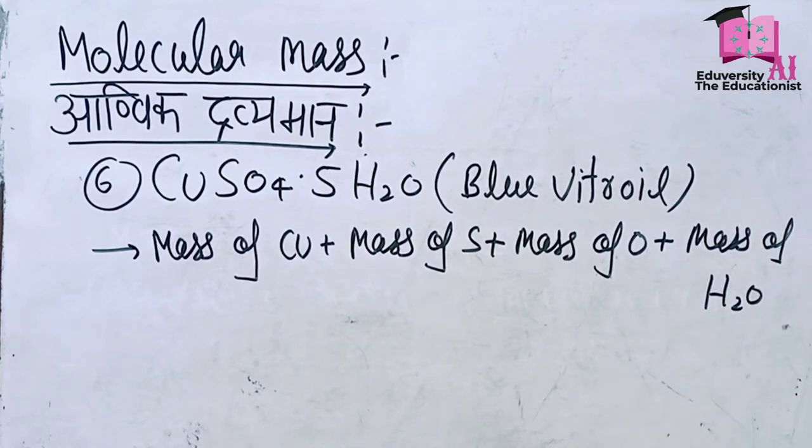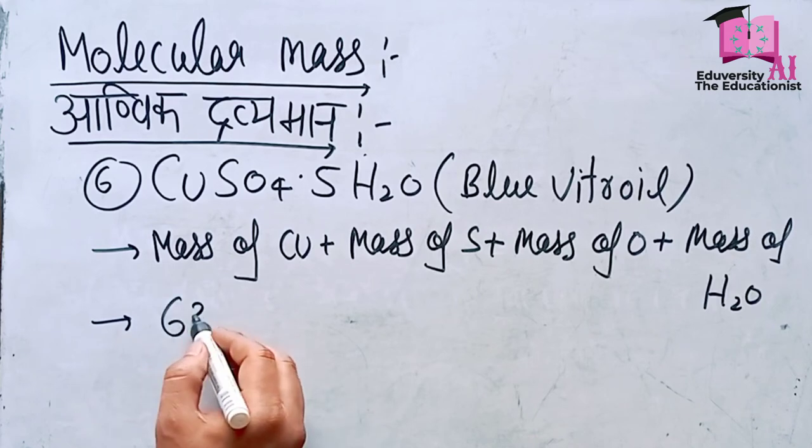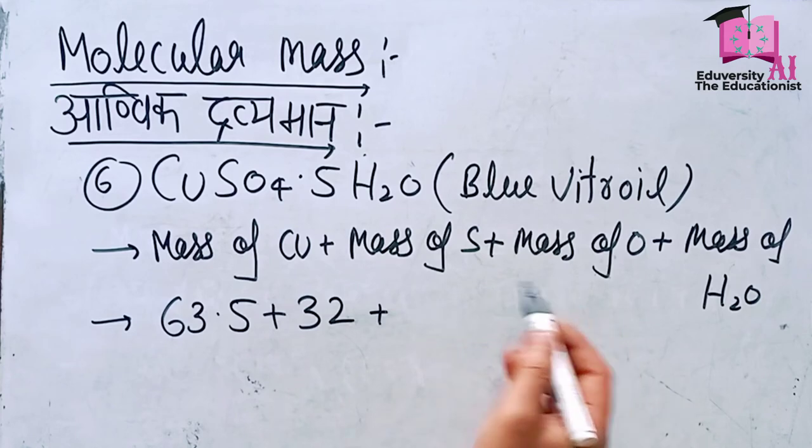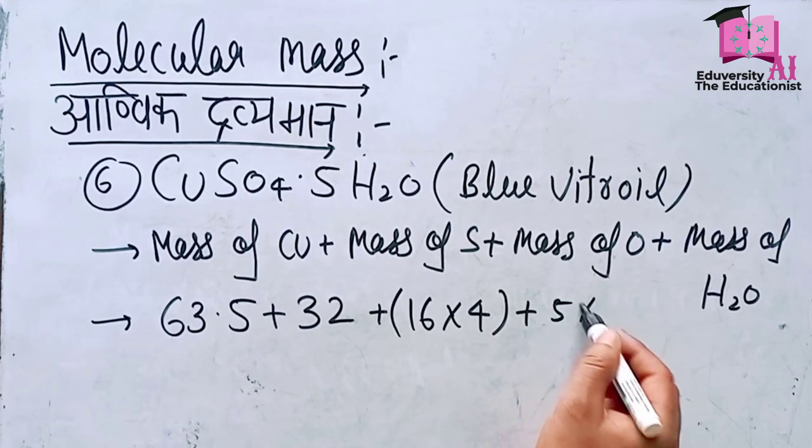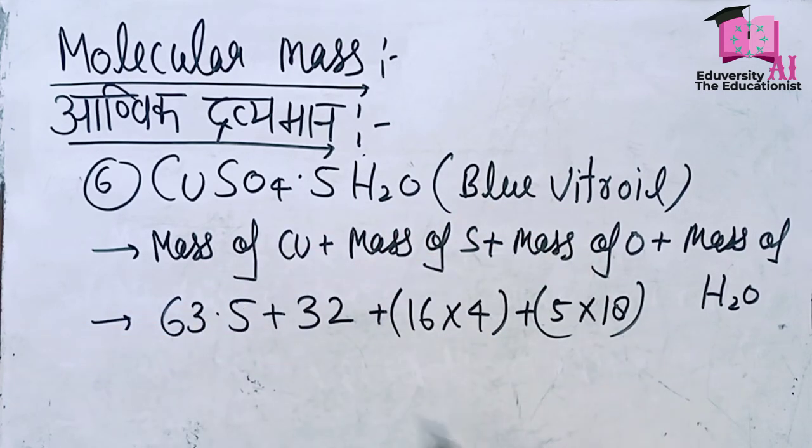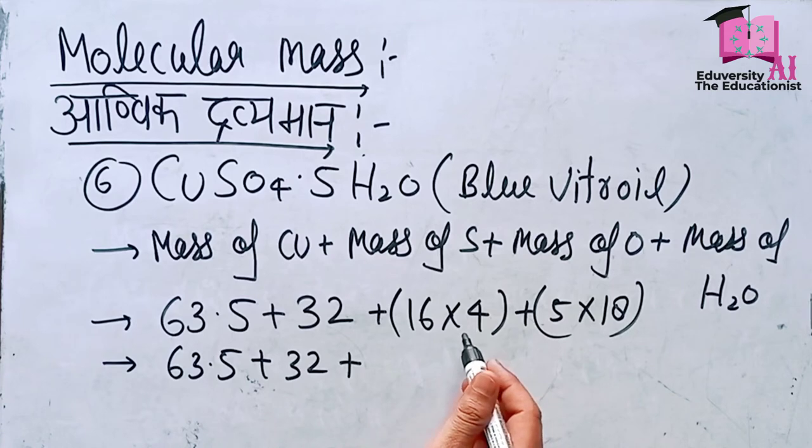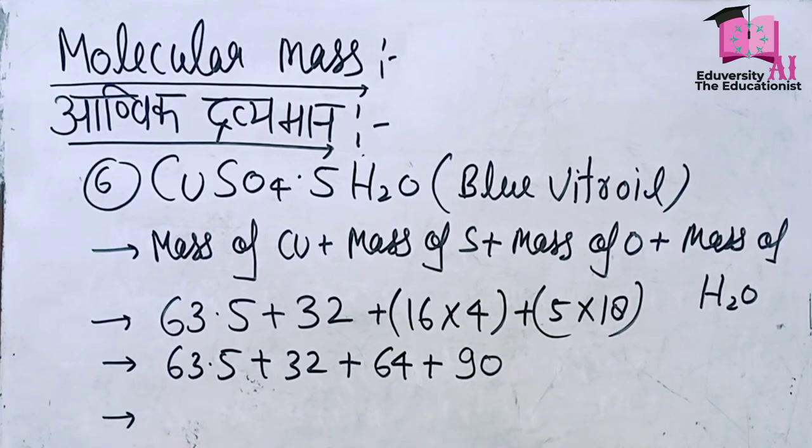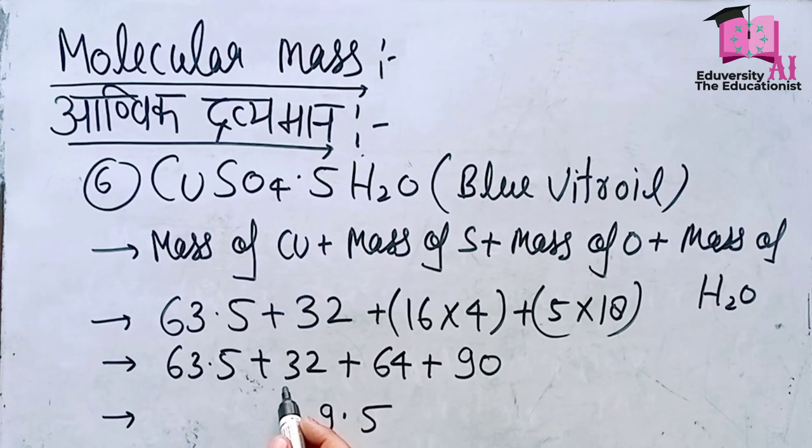Copper's mass is 63.5 (single atom), plus sulfur 32 (single atom), plus oxygen 4 atoms so 16 times 4 equals 64, plus 5 water molecules, and one water molecule weighs 18, so 5 times 18. Further solving: 63.5 plus 32 plus 64 plus 90. Doing the sum: 2 and 6 is 8, 8 and 3 is 11, 11 and 6 is 17, 17 and 3 is 20, 20 and 6 is 26. This gives 249.5 unified AMU.